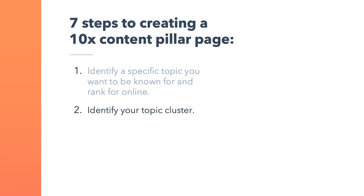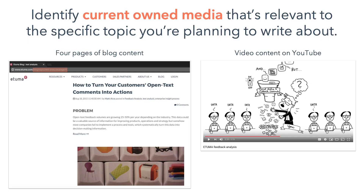Second, identify your topic cluster. You may already have content created in support of the topic you're intending to rank for. Instead of reinventing the wheel, identify current owned media that's relevant to the specific topic you're planning to write about. In this case, Etuma already had four pages of text analysis-themed blog content and a series of YouTube videos. And while having existing content is great, don't sell your business short.